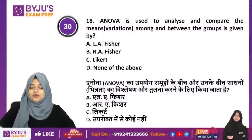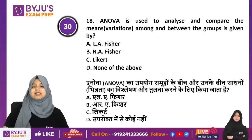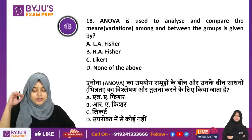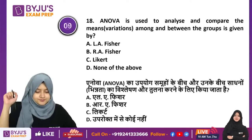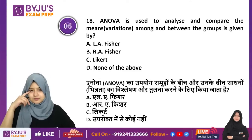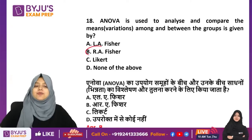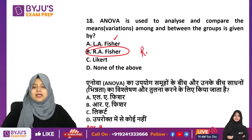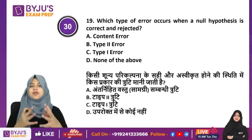Question 18 — ANOVA is used to analyze and compare means among and between groups. Who gave ANOVA? The correct answer is option B: R.A. Fisher — Ronald Fisher. Those who only know 'Fisher' may have had trouble here because the full name is R.A. Fisher. ANOVA is used to make comparisons between two or more groups.